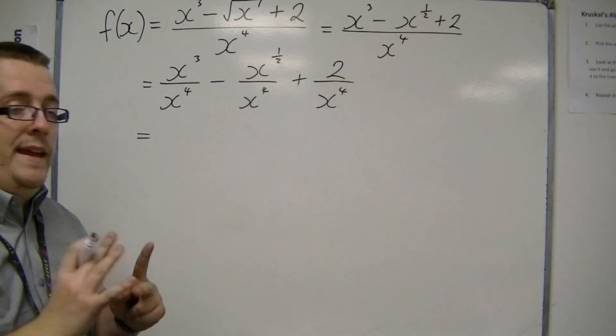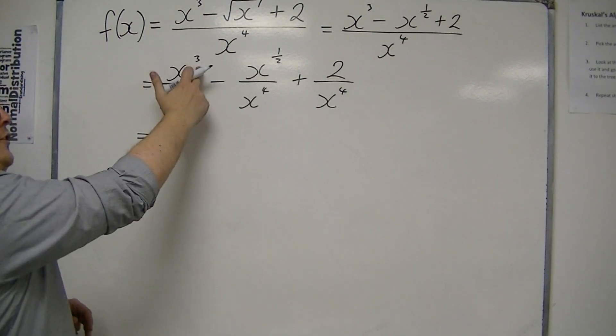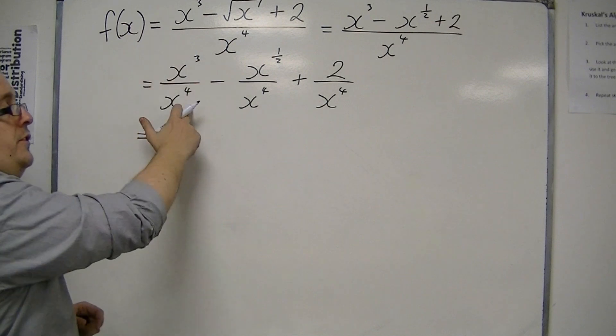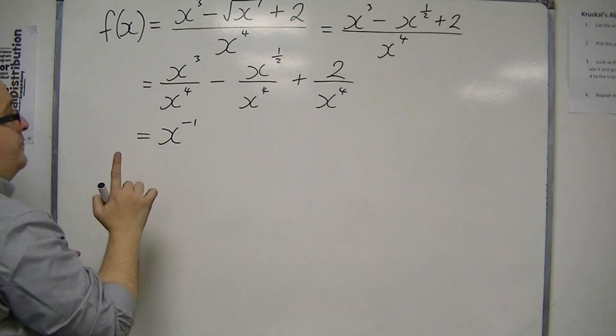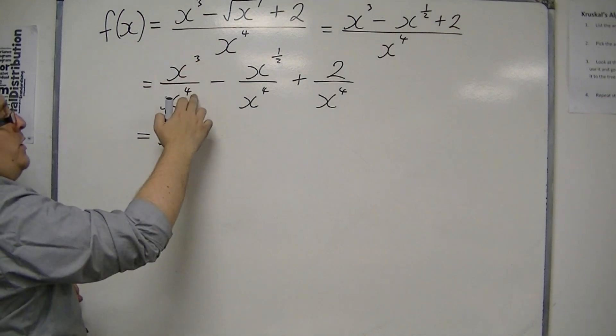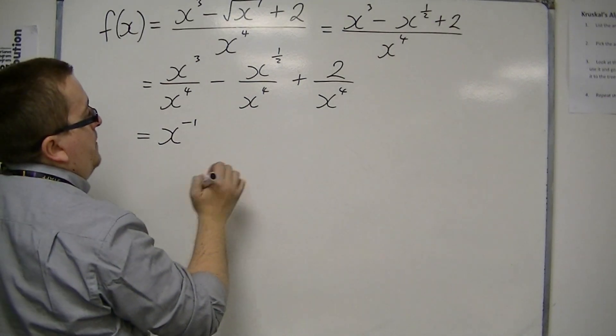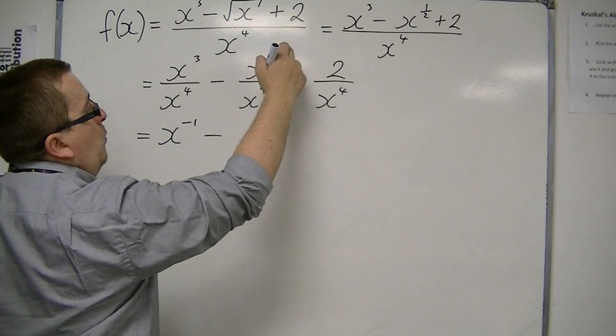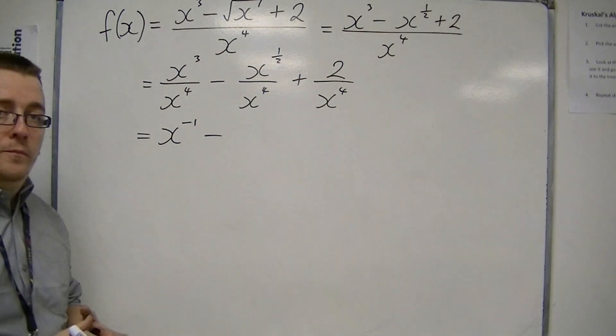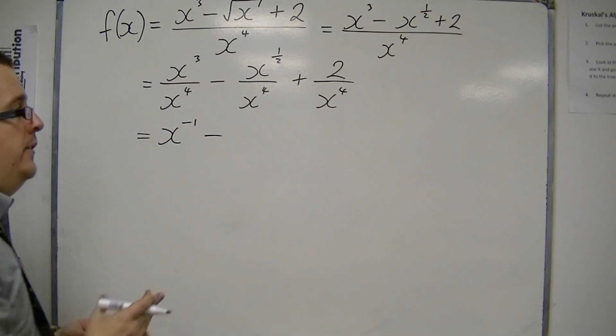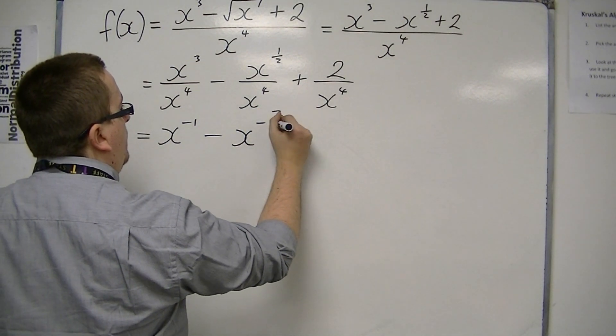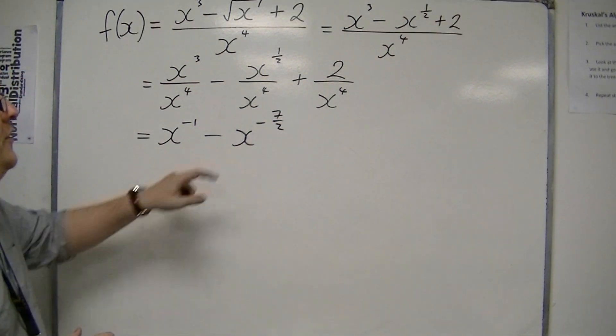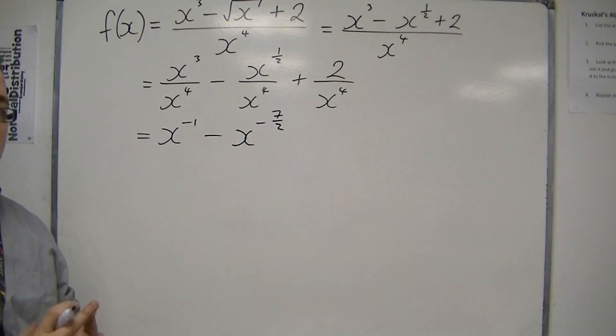So I can then rewrite each of these. Now x cubed divided by x to the 4 is x to the minus 1, because 3 take away 4 is minus 1. Then we have 1 half take away 4. Well, 4 is 8 halves. So this is x to the minus 7 halves. 1 half take away 8 halves is minus 7 halves.